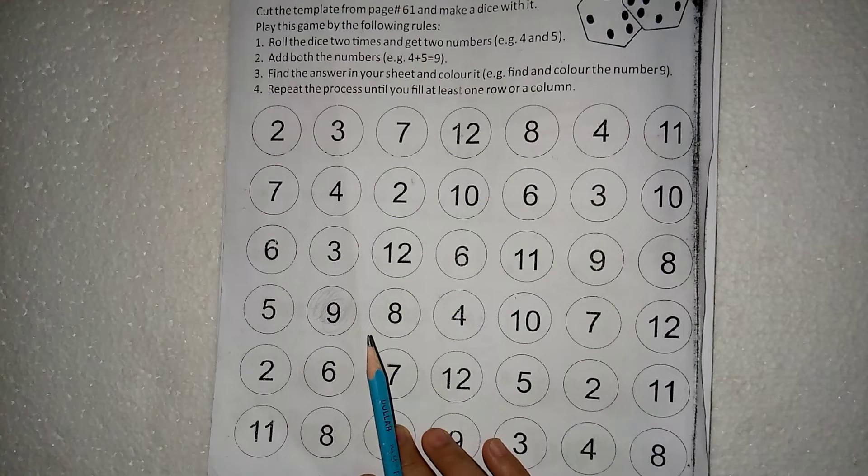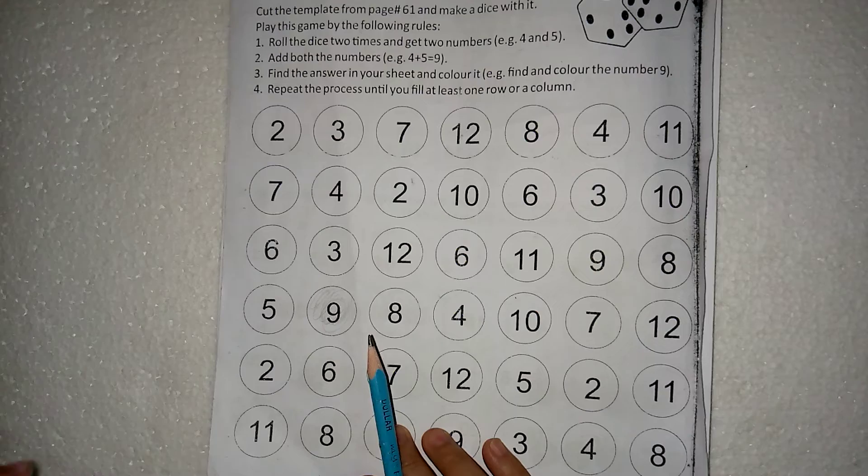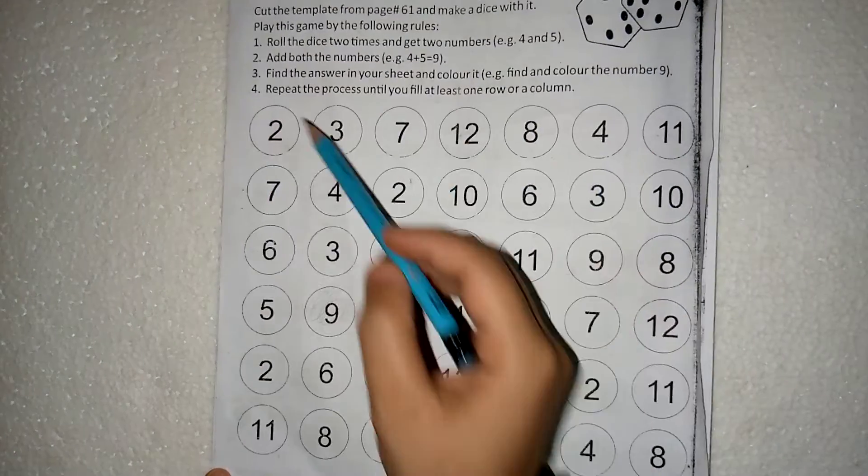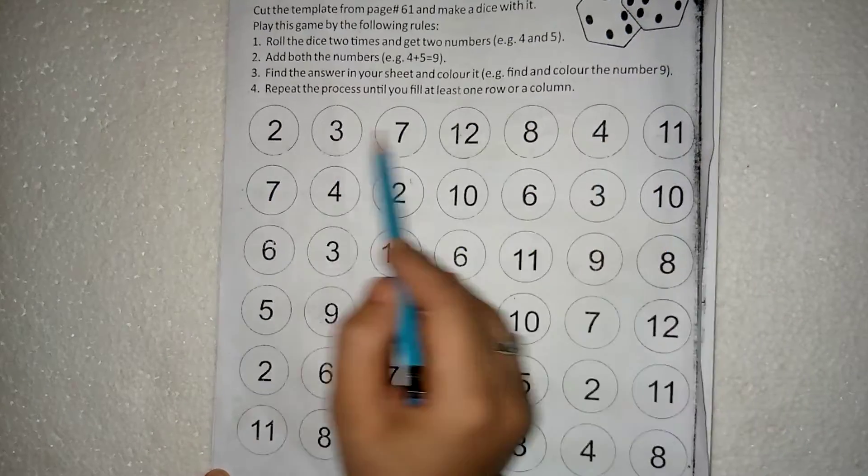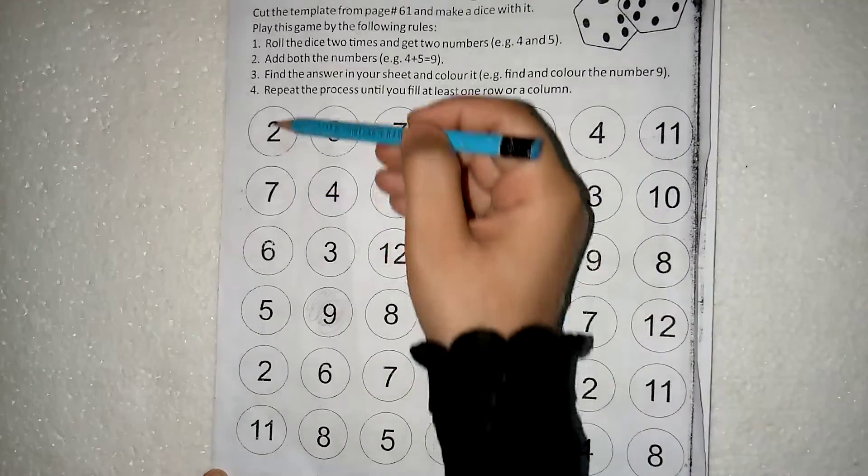In this way, you have to repeat this process until you reach the end. Row means that you have to find out horizontally and a column means that you have to find out vertically.